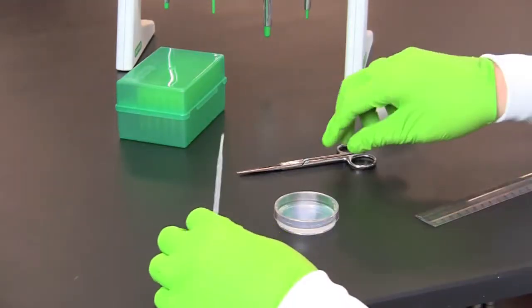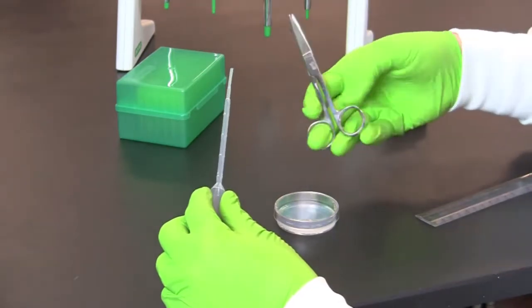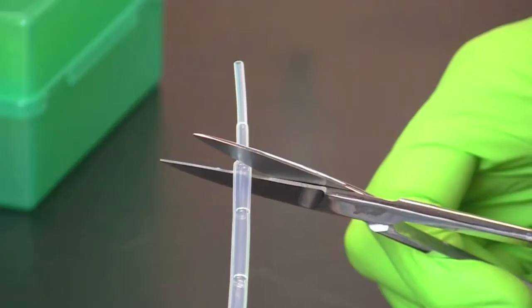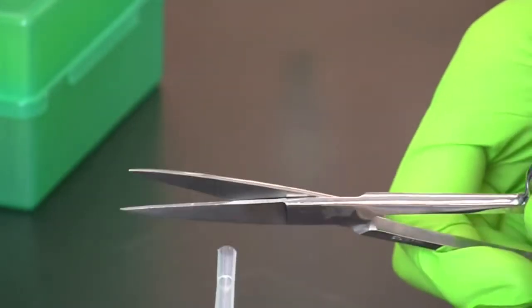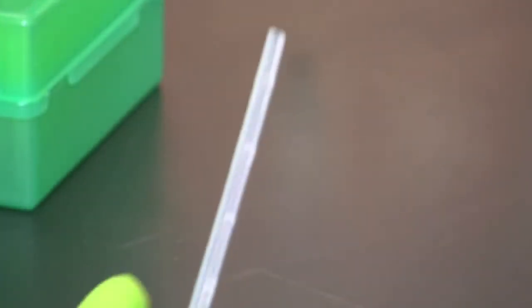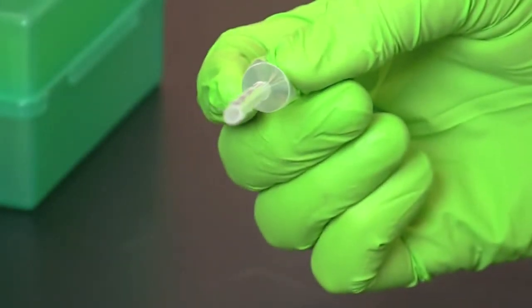Using scissors or a razor blade, cut off the end of a 1 milliliter transfer pipette between the 250 microliter and the 100 microliter marks. Once cut, the pipette tip will be used to puncture holes out of the agarose to prepare the assay plate.